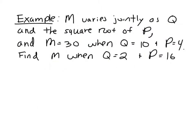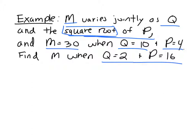Alright, let's do one more example. So now we have M varies jointly as Q and the square root of P. This is a little different because we have the square root instead of just saying it varies jointly as Q and P. Now it varies jointly as Q and the square root of P, so we need to take that into consideration. And M equals 30 when Q equals 10 and P equals 4. And we need to find M when Q equals 2 and P equals 16.